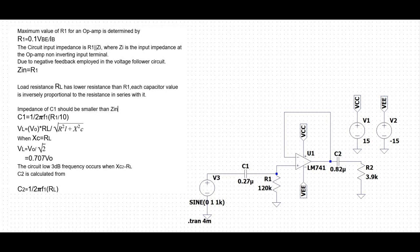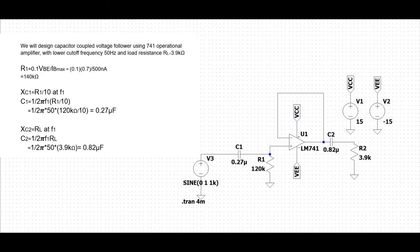Now let us design a capacitor coupled voltage follower using the LM741 op-amp. Assume the lower cutoff frequency for the circuit is 50 Hz and the load resistance is 3.9 kΩ.